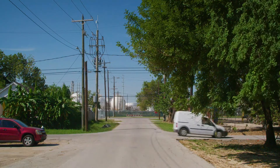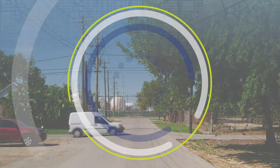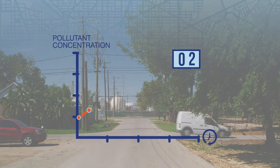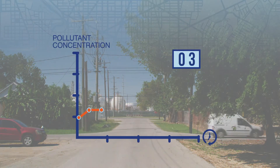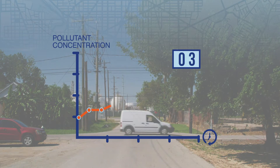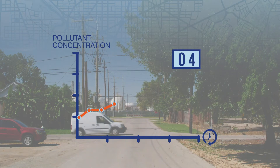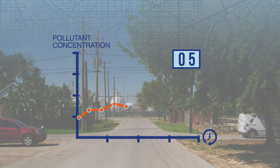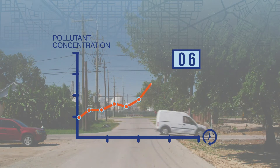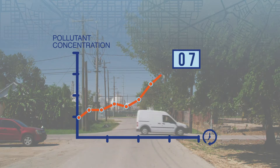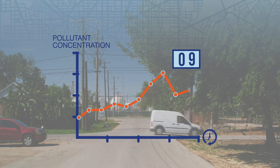But each measurement is a snapshot in time of pollution at a certain location. However, you need to take repeated measurements to create a stable, robust, and representative picture of pollution at any one location over time.